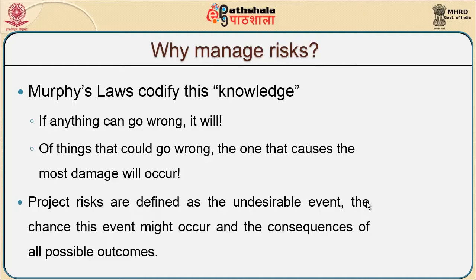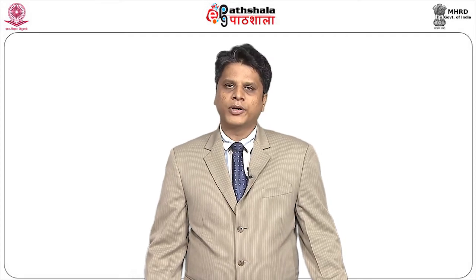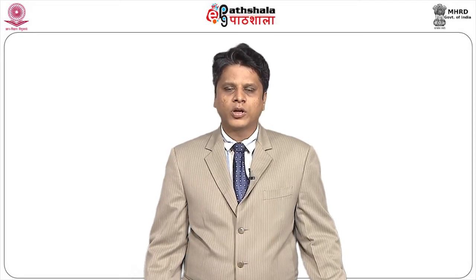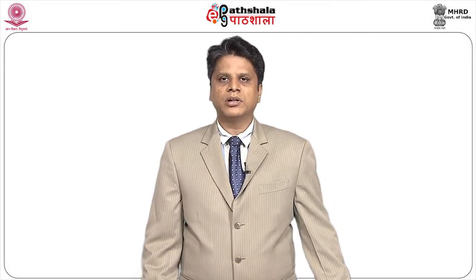First, we will try to understand how to manage risks. As an analogy from psychology, there is a law called Murphy's Law, which codifies this knowledge: if anything can go wrong, it will. So if a person thinks that a particular code, module, or program will go wrong and simultaneously starts working on that, then there is a possibility that the same will go wrong.